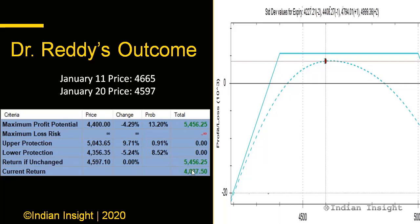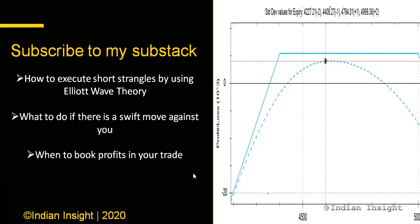The value of the options shorted crashed significantly, and you were making around 4000 rupees in just 10 days on this trade. For more premium content — including how to trade short strangles using Elliott Wave theory, what to do if there is a sudden swift movement against you, and when to book profits — you can subscribe to the premium version of my Substack.